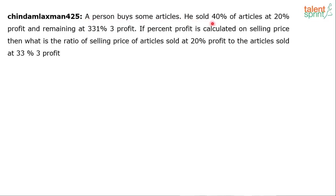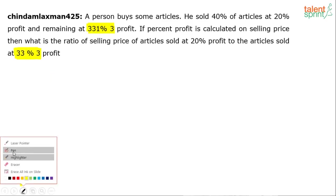A person buys some articles. He sold 40% of articles at 20% profit and remaining at 33⅓% profit. If percent profit is calculated on selling price, what is the ratio of selling price of articles sold at 20% profit to articles sold at 33⅓% profit? This value is not clear, so I request Lakshman and everybody else: when you post questions in the forum, please check it. The question cannot be solved because values are not known, but I'm going with an assumption.